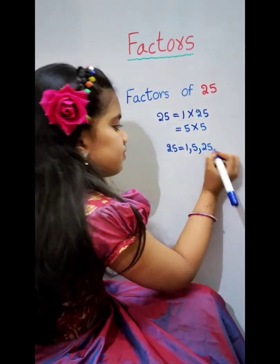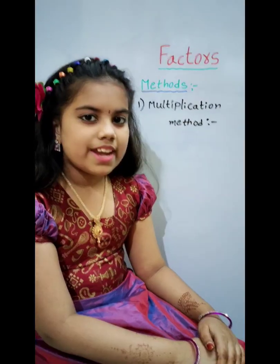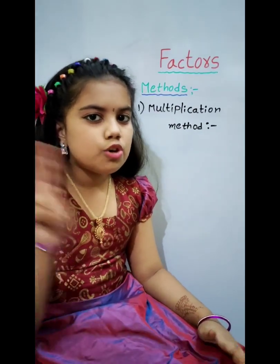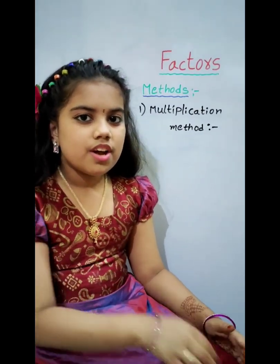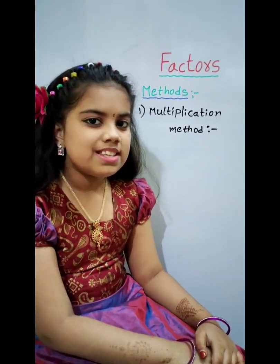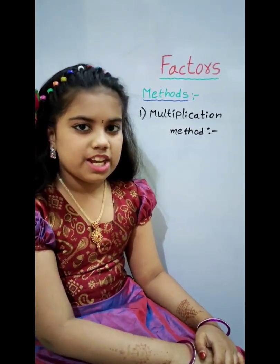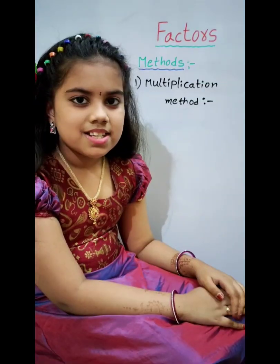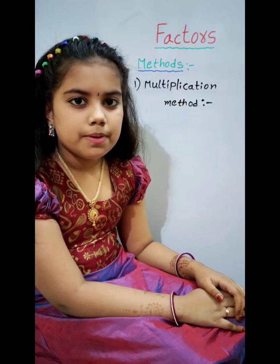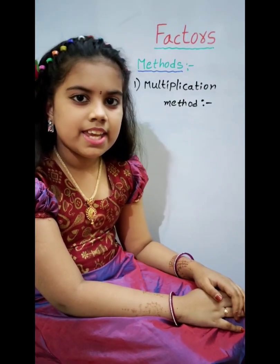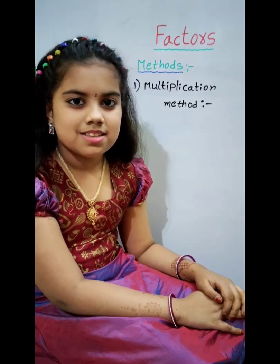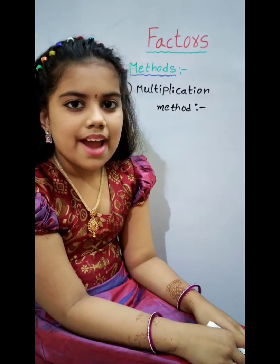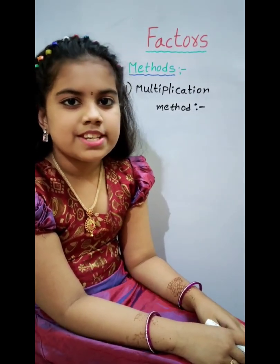We can find the factors by using two methods. The first one is the multiplication method. Factors are numbers you can multiply to get the given number. For example, factors of 66.